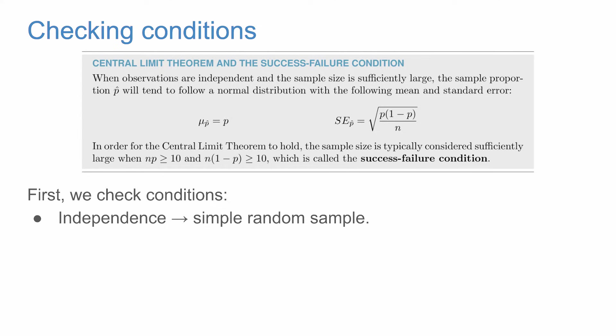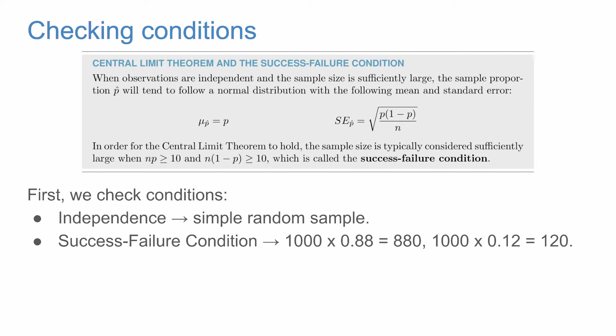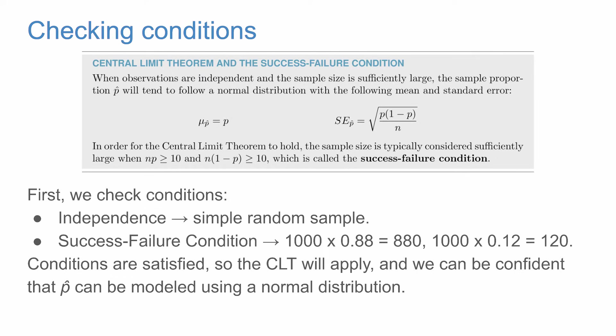Going back to our solar energy example, we check the independence condition first. The sample was a simple random sample, and cases in a simple random sample are independent — so the first condition is satisfied. For the success-failure condition: 1,000 × 0.88 = 880 ≥ 10, and 1,000 × (1 − 0.88) = 1,000 × 0.12 = 120 ≥ 10. Both conditions are satisfied, so we can be confident that p-hat can be modeled using the normal distribution.